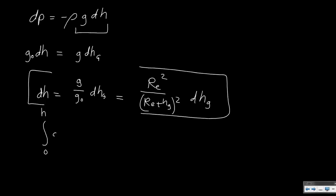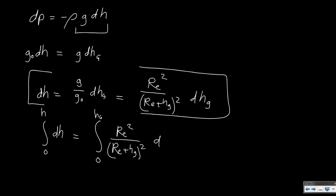We go to a certain geopotential altitude h, and this should equal — for the same pressure change — going to the geometric altitude hg, which gives us this equation. This is an integral we can solve; it is a simple polynomial divided by a polynomial that we can write in a neater way.